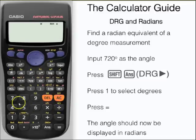Let's try that one more time. This time with 720 degrees. Press shift and DRG, then 1 for degrees. Press equals, and here we have the radian equivalent, 4 pi.